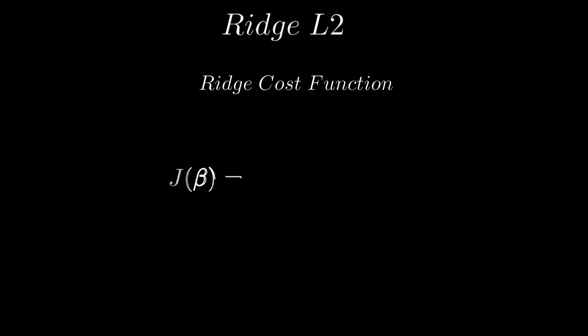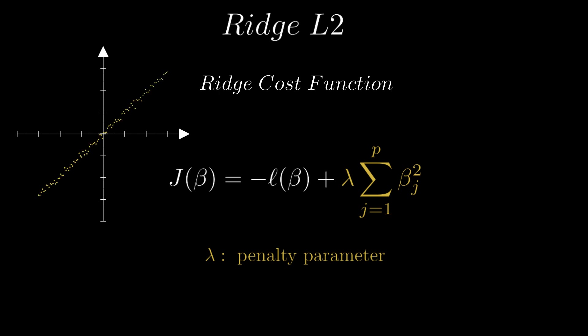The Ridge, also called the L2 regularization, adds this penalty term to the cost function. And lambda is called the penalty parameter, which we can tune and control the strength of the regularization. The Ridge helps us improve the accuracy and deal with multicollinearity and high dimensionality.